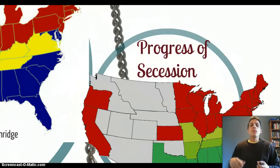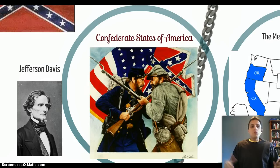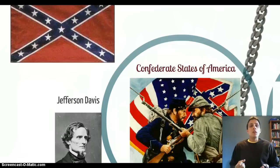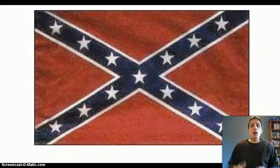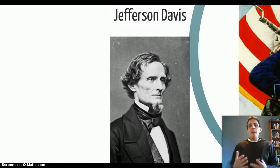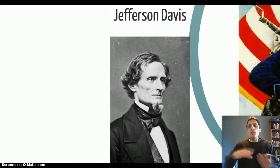The Confederate States of America that's formed is going to model a lot of their ideas off America, because these guys are Americans forming a new country. Their flag — the Confederate flag — has some similarities to the American flag, with stars representing each state in their new Union. They're going to draft a Constitution, have a Congress, and have a presidency. Their president is going to be a man named Jefferson Davis. They're not too different from the United States as far as institutions go; the big division is really the sectional division we've been talking about.